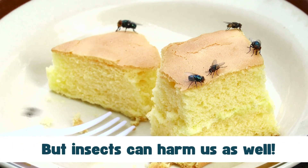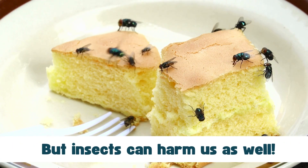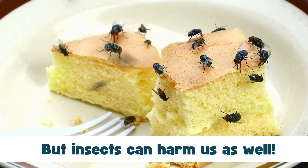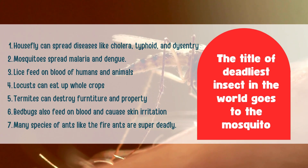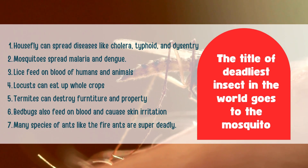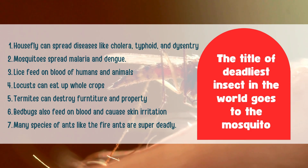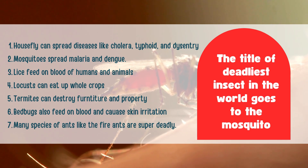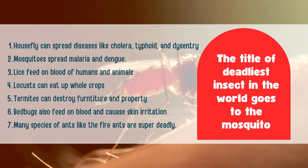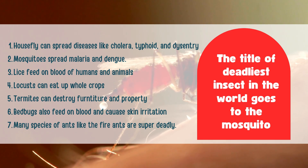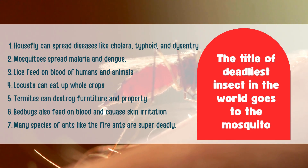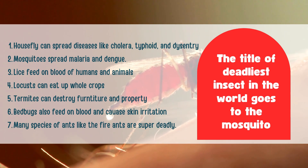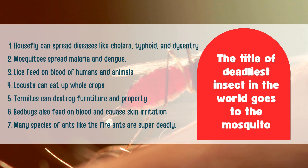But insects can harm us as well. They can be the cause and spread of a lot of diseases. House flies, mosquitoes, lice, locusts, termites, bed bugs, and many species of ants can prove to be deadly for humans. Perhaps the title of the deadliest insect in the world goes to mosquitoes, because they spread malaria and dengue on a very large scale.